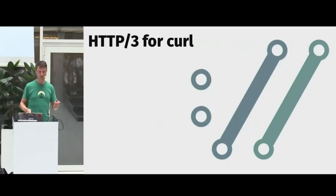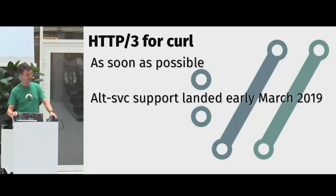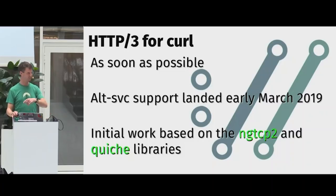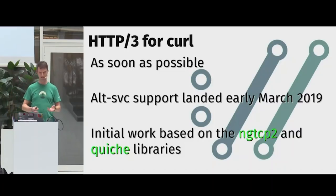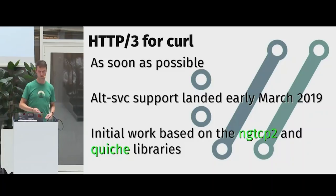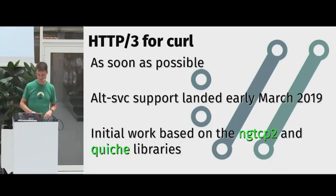I want to support HTTP/3 in curl as soon as possible, but it's really complicated given all the challenges mentioned. I've added support for Alt-Svc, and I'm going to work with two libraries — quiche and nghttp3/ngtcp2 — to make it happen. Both recently got HTTP/3 support. I may be able to support HTTP/3 soon if I go with one of those libraries patched to support the TLS parts, though I'll have to commit to one TLS library — quiche uses BoringSSL, and ngtcp2 can use BoringSSL or OpenSSL.